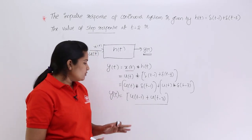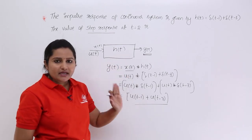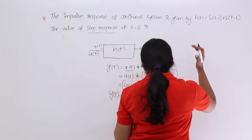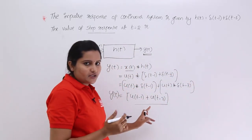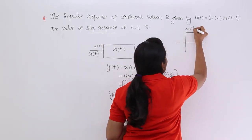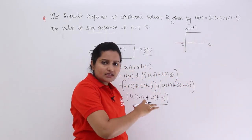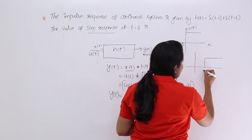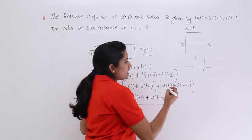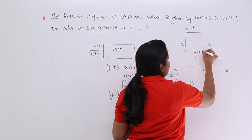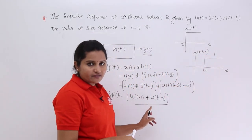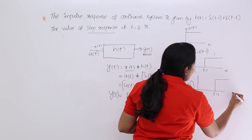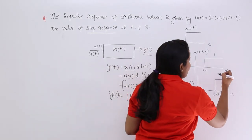They are asking for the value of y(t) at t = 2. First, let's consider the step response diagram. This response is the combination of two shifted unit steps. Generally, u(t) starts at 0 and maintains amplitude 1 up to infinity. Here, u(t−1) is a shifted unit step — it starts at t = 1 and maintains 1 up to infinity. Similarly, u(t−3) starts at t = 3 and maintains 1 up to infinity.